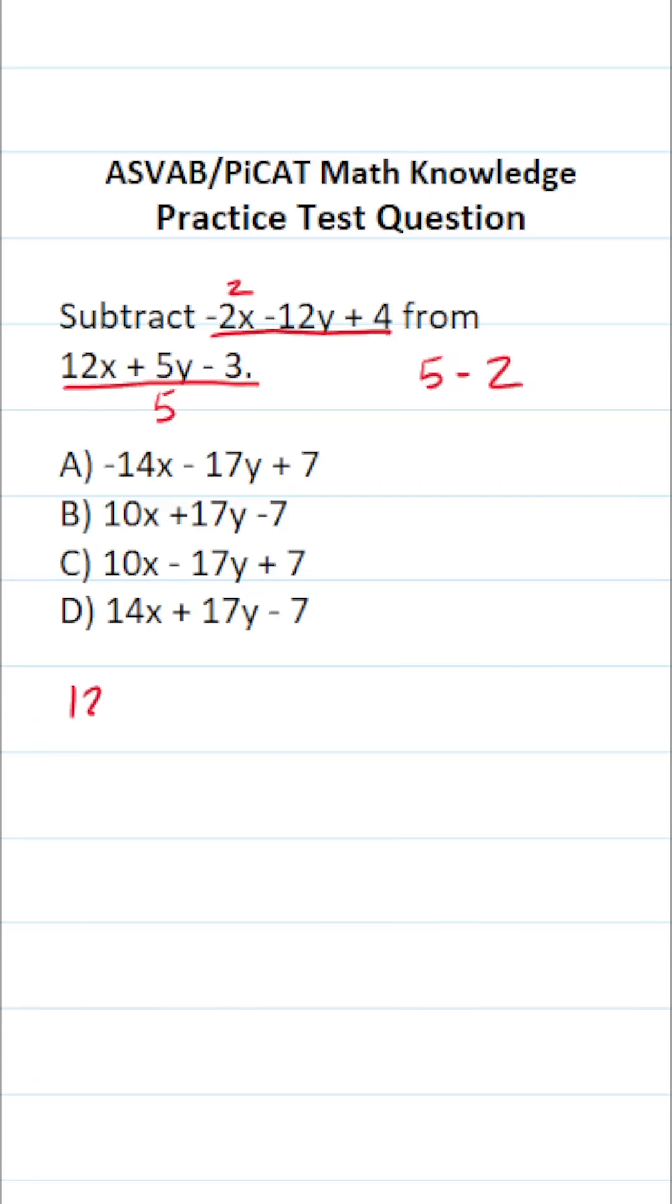This becomes 12x plus 5y minus 3. From that, we're subtracting this entire polynomial, so we have to include parentheses. So this is minus negative 2x minus 12y plus 4. The next step is to take this negative and distribute it to every term in this second polynomial.